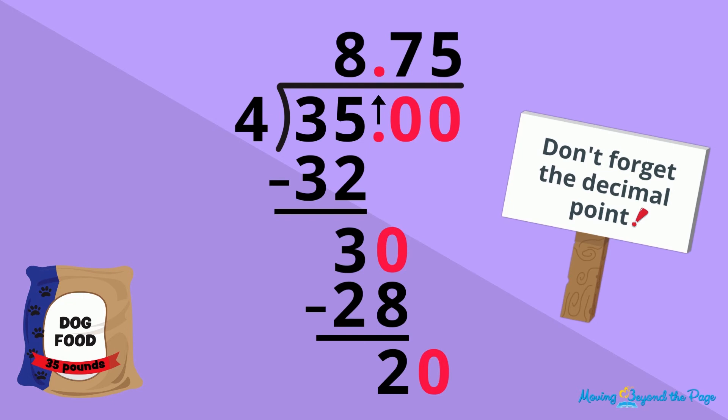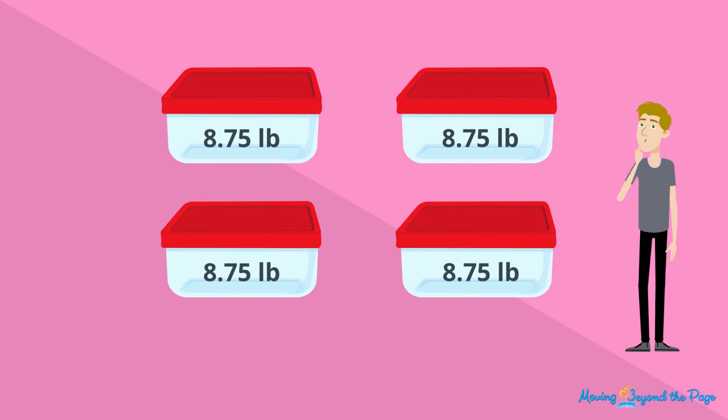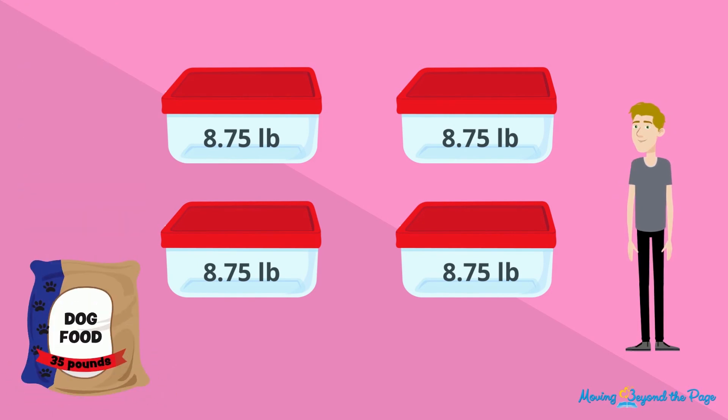Don't forget this important step. Now, you see that each container should get 8 and 75 one-hundredths pounds of dog food. Of course, you can check your division by multiplying the divisor and the quotient.